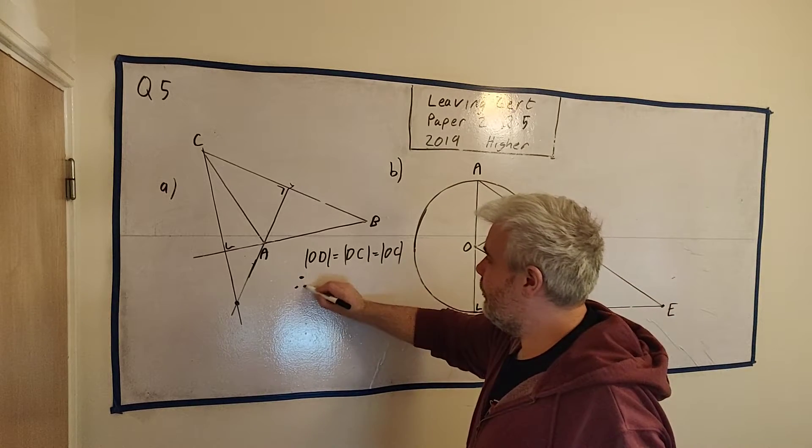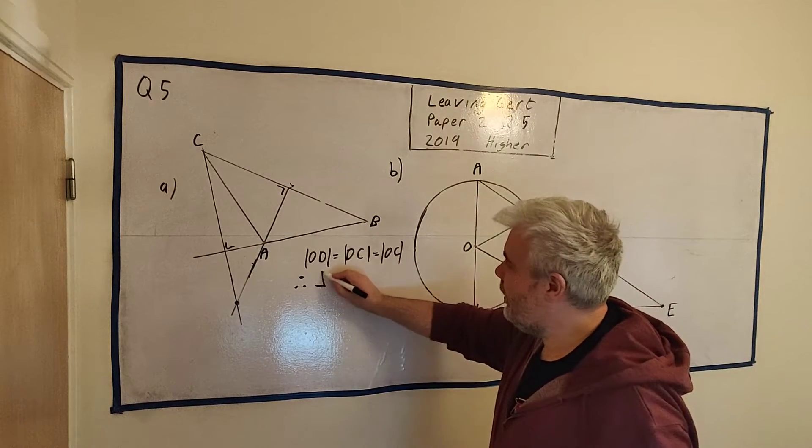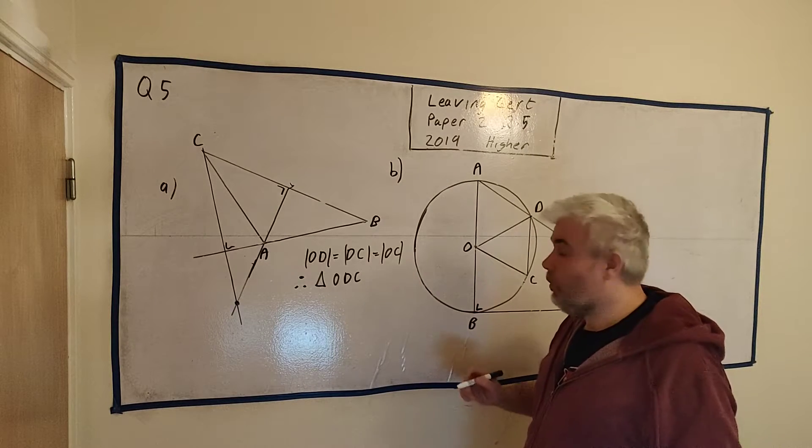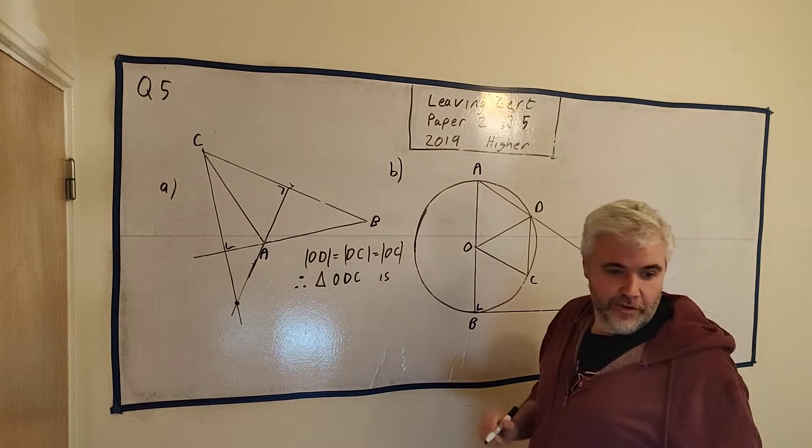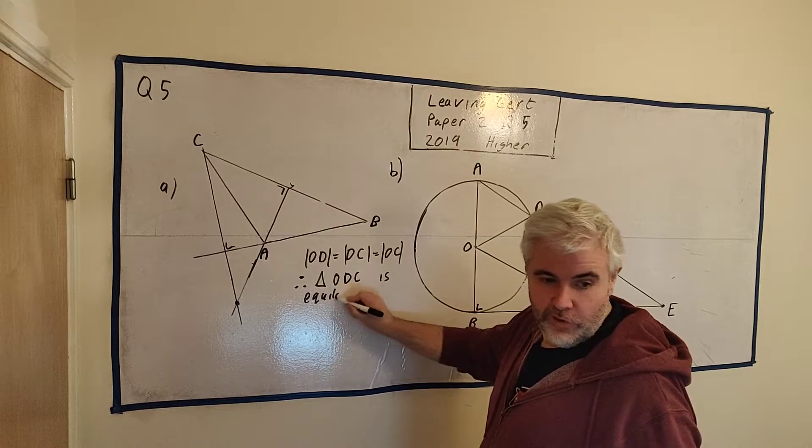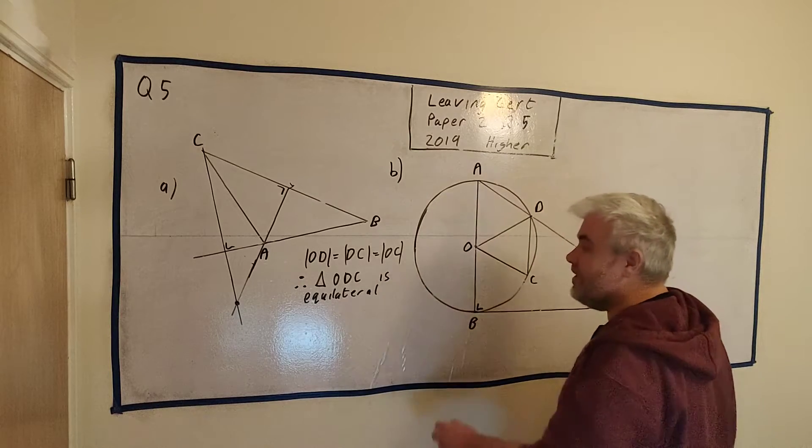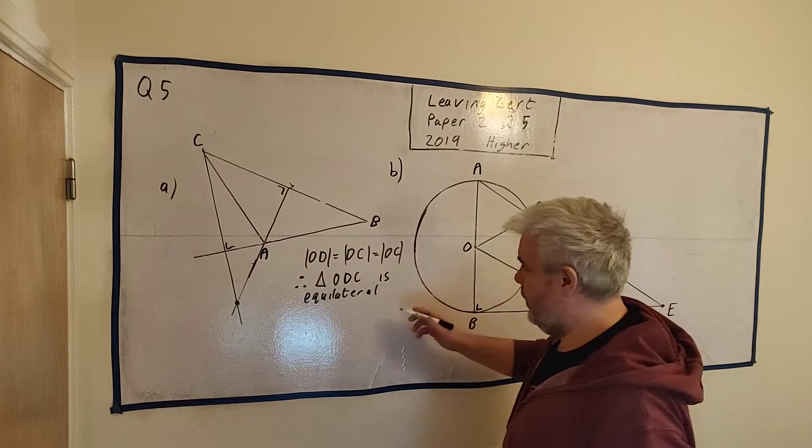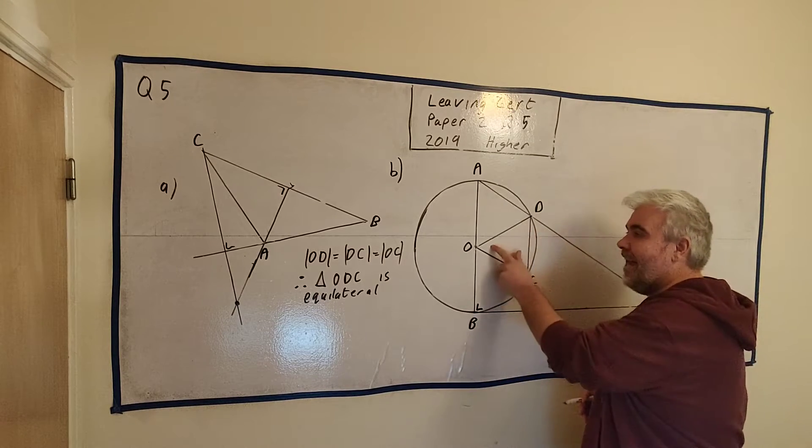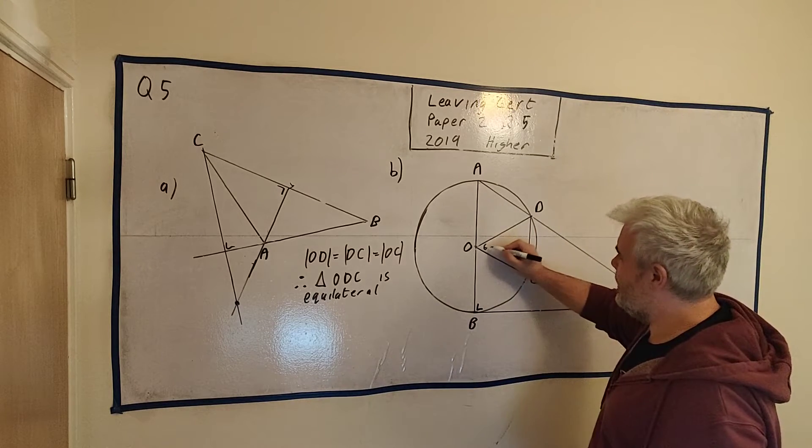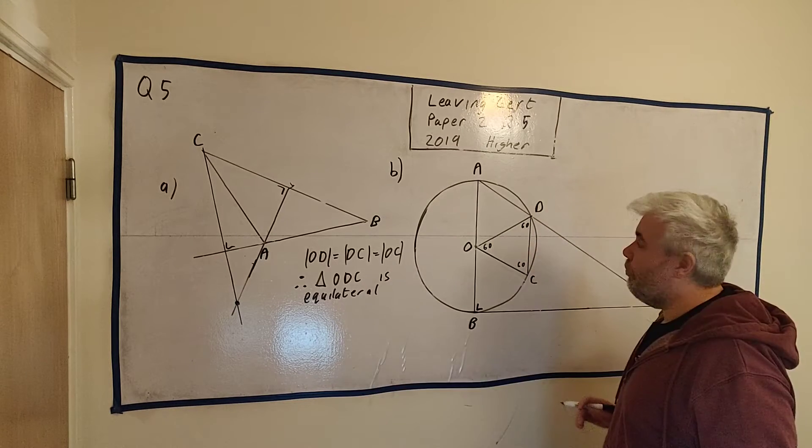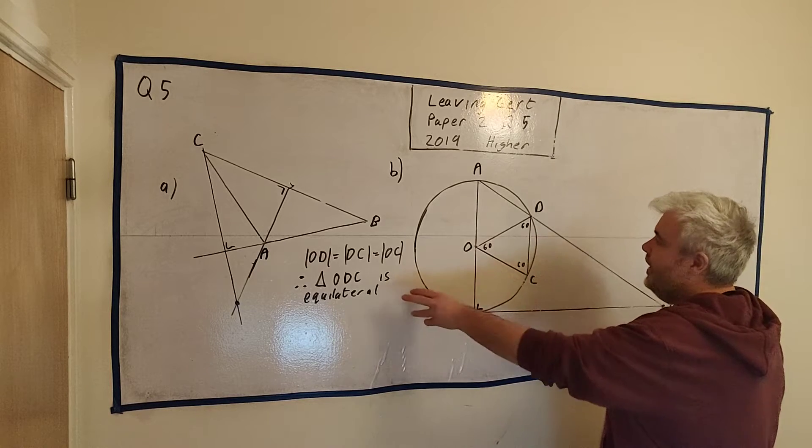Therefore, this triangle here, ODC is equilateral. Which means all of these angles are 60 degrees. Let's just write that in on our paper perhaps. That'll be good enough for the examiner. But you could go ahead and write these down a bit more formally.